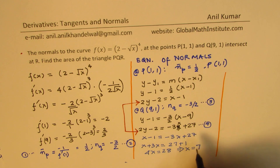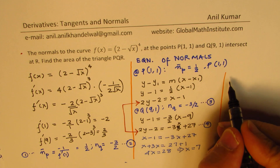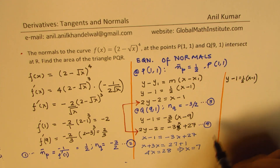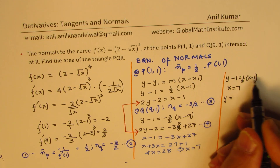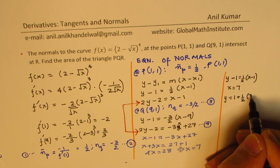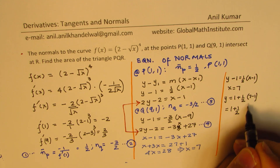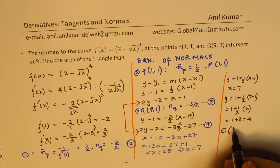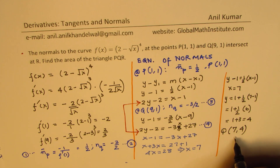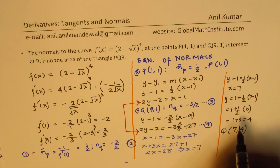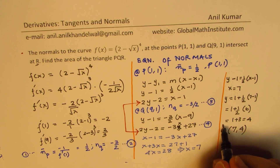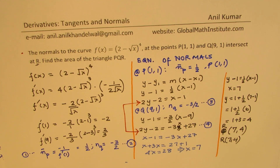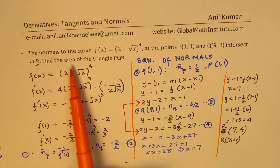Once we have x = 7, we substitute into the normal equation at P: y − 1 = ½(7 − 1) = 3, so y = 4. Therefore the point of intersection R is (7, 4).